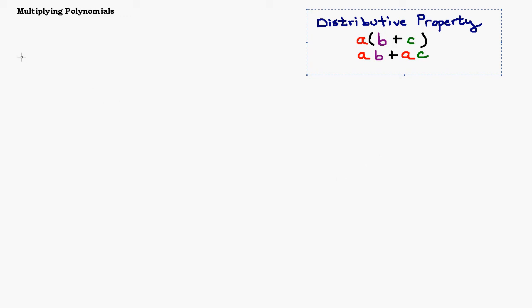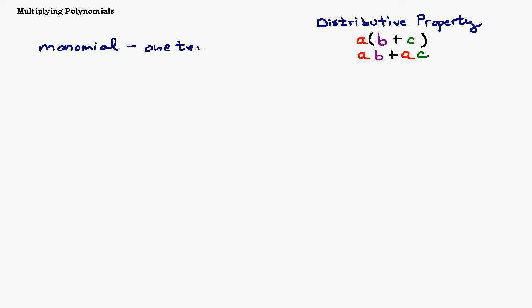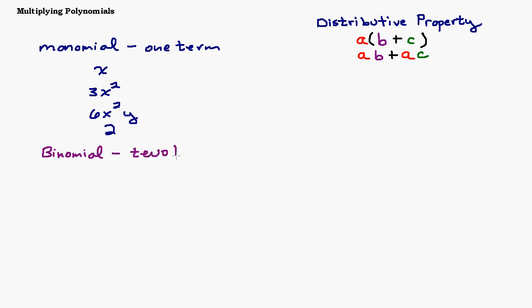In this video we are going to talk about multiplying polynomials. A polynomial could be one term, like a monomial, or two terms, which is a binomial. A monomial is something like x, 3x squared, or 6x squared times y — there are no pluses or minuses, just multiplying a bunch of factors together. A binomial is the sum or difference of two monomials, so we have two terms.